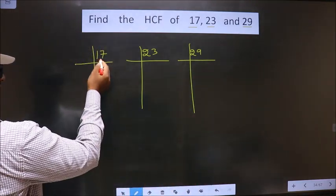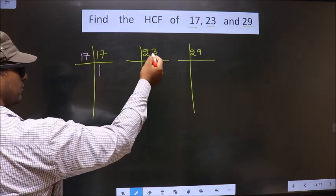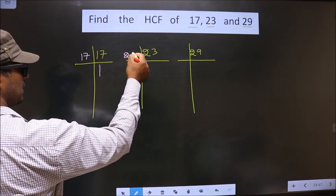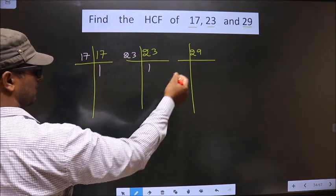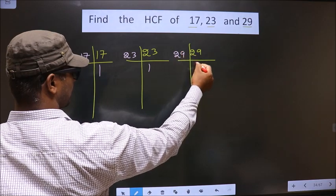Now, see, 17 is a prime number, so we take 17 and 1. Here, 23 is also a prime number, so we take 23 and 1. Here, 29 is a prime number, so we take 29 and 1.